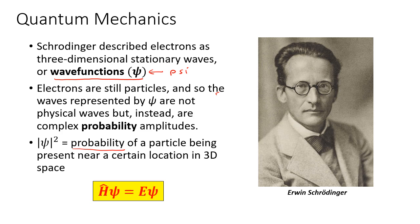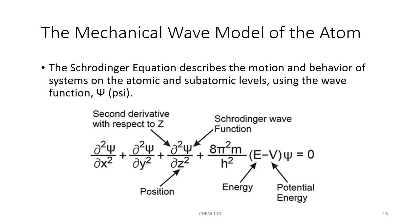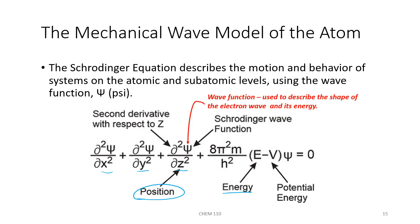Schrödinger developed an equation that can be solved to give wave functions, which describe the shape of the electron wave and its corresponding energy. The Schrödinger equation describes the motion and behavior of systems on the subatomic and atomic levels using the wave function psi. One version is a partial second differential equation giving information about x, y, and z position coordinates as well as the energy of the electrons. The wave function psi tells us the shape and the energy of the electron wave — those are the two properties we care about most.